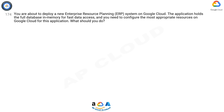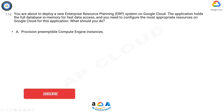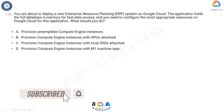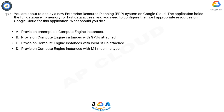Question 174: You are about to deploy a new enterprise resource planning (ERP) system on Google Cloud. The application holds the full database in memory for fast data access, and you need to configure the most appropriate resources on Google Cloud for this application. What should you do? A) Provision preemptible Compute Engine instances. B) Provision Compute Engine instances with GPUs attached. C) Provision Compute Engine instances with local SSDs attached. D) Provision Compute Engine instances with M1 machine type.